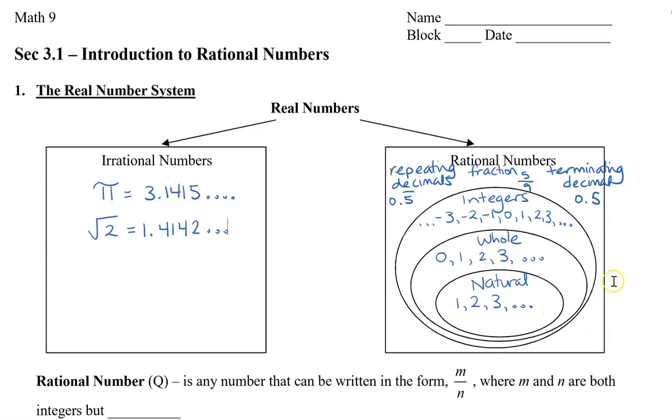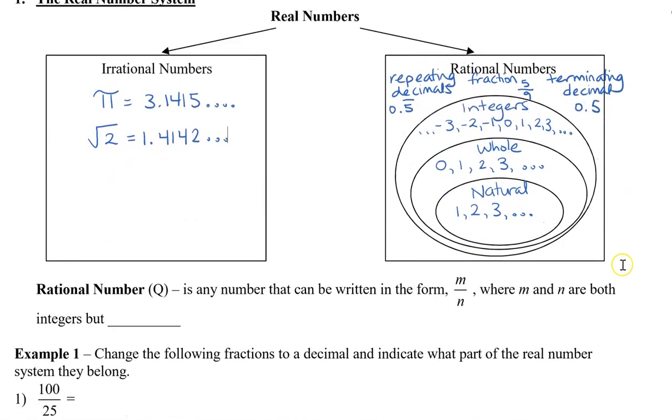Now, the rational numbers, in the mathematics world, we abbreviate it with the letter Q. It is any number that can be written in the form m over n, where m and n are both integers, but n, our denominator, cannot equal 0 because we can't divide by 0.